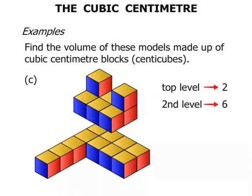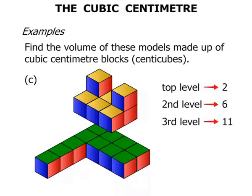Our bottom level now. One, two, three, four, five, six, seven, eight, nine, ten, eleven. So the third level, we have got eleven cm cubed.